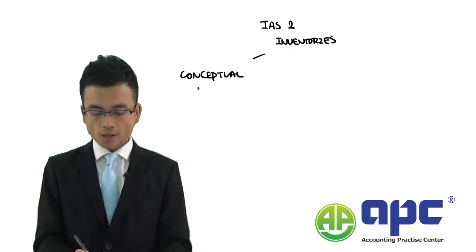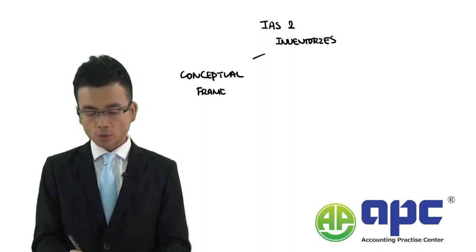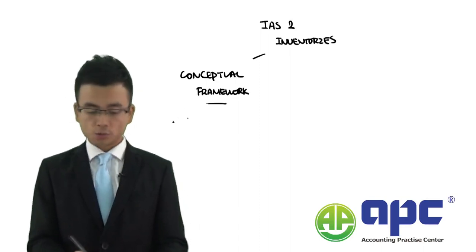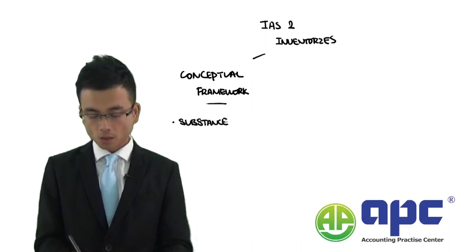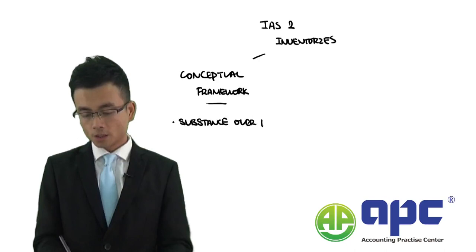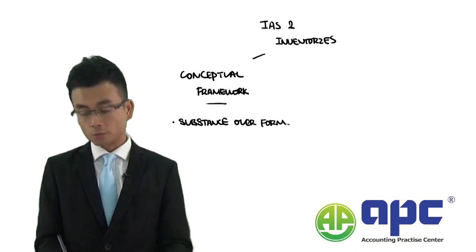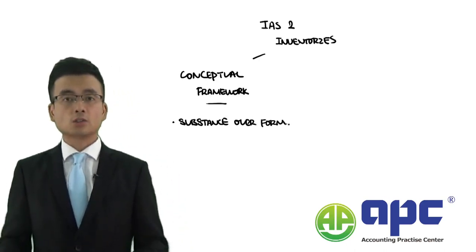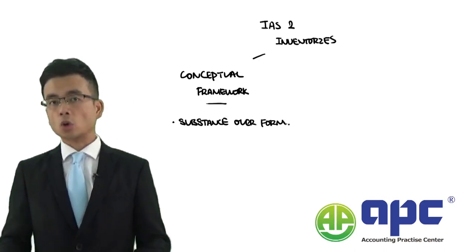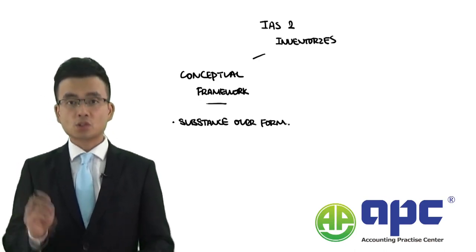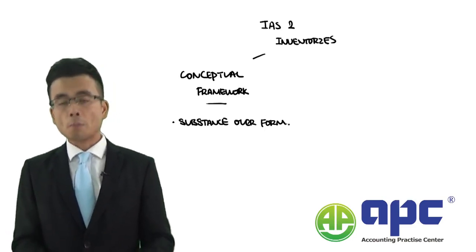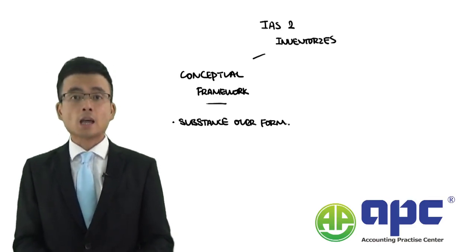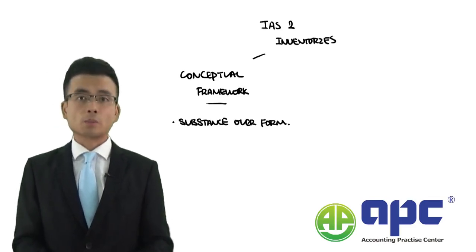In IAS-2 Inventories, there will be several requirements in the conceptual framework. One very important requirement is the concept of substance over form, which means that in some circumstances the form of the transaction will appear to be inventories — items we hold to sell in the normal course of business — but the substance may not be inventories at all. That is why we may account for the transaction under IAS-16 Property, Plant and Equipment.